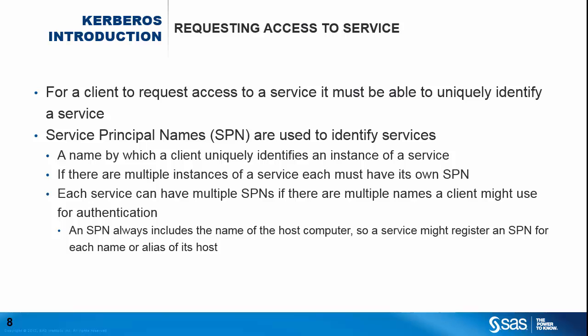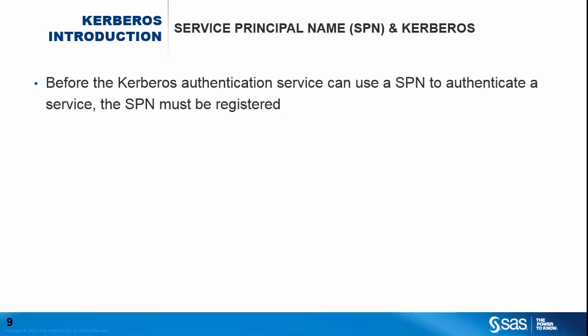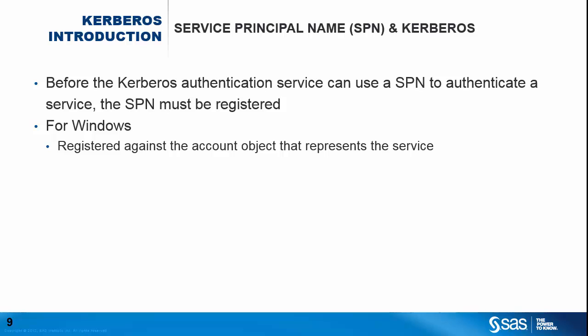Hence, if we have different names or aliases for a machine, we need to have multiple SPNs. We've seen the client needs to use the service principal name to request access to a service, but before the SPN can be used, it needs to be registered. If we consider the Windows world, the SPN needs to be registered against the account object that represents the service — this could be a user account or a computer account. Each given SPN must only be registered against a single account.